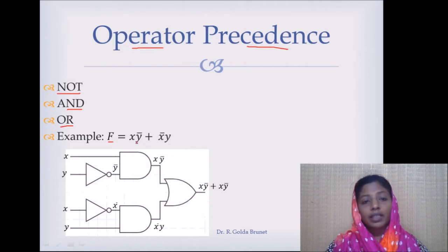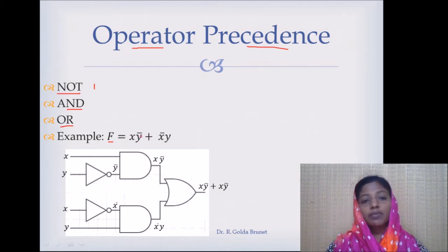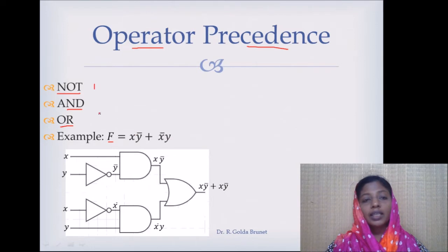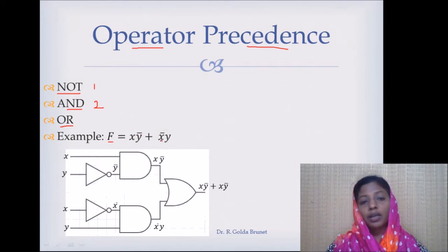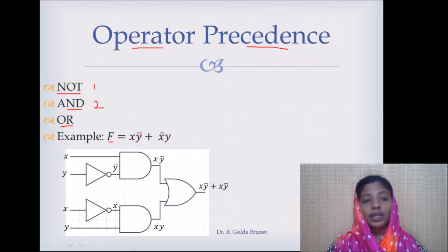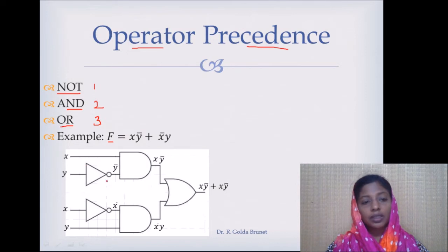First, we have to evaluate the NOT operation because NOT operation gets the topmost priority. So NOT operation will be evaluated first: Y̅ will be computed, and similarly X̅ will be computed. Then the second priority goes to the AND operation, so we will compute X AND Y̅, and similarly X̅ AND Y. These two terms will get evaluated, and finally we will apply the OR operation to these partial products. That is what is illustrated in this figure as well.